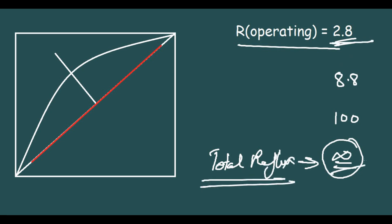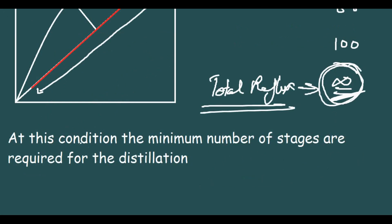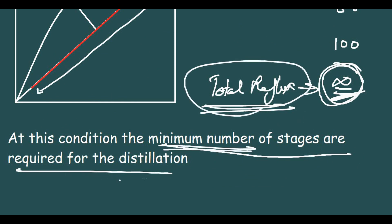From 2.8 to infinity — this infinity condition is called total reflux. At total reflux, both operating lines become a single line equal to the diagonal, and the distillation column is said to be operating at total reflux. This condition is important because the minimum number of stages are required for distillation at total reflux.